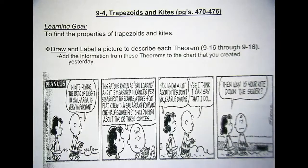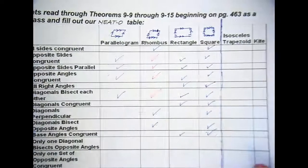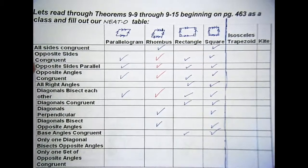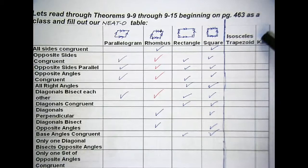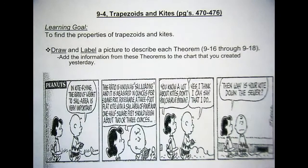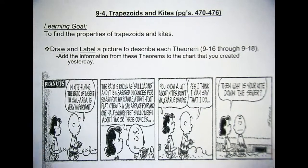Alright, so trapezoids and kites today. Draw and label a picture to describe each of theorems 9-16, 9-17, and 9-18, and add these to the chart you created yesterday. This is the chart I'm talking about. So we call this chart, we now have isosceles trapezoids and kites. I'm going to give you guys about 4 or 5 minutes to go through those real quick.